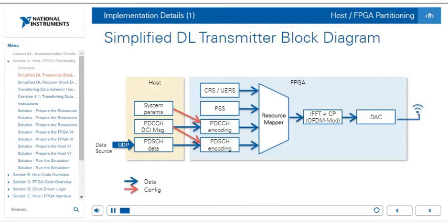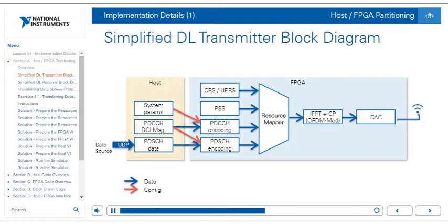This is a simplified block diagram of the downlink on the transmitter side. We can track the flow of both data and configuration information. Data from a UDP source reaches the host, which handles system parameters, the PDCCH and DCI messages, and the PDSCH data. The system parameters configure the PDCCH encoding on the FPGA, while the PDCCH and DCI messages configure the PDSCH encoding on the FPGA. Data flows from the PDCCH and DCI message to the PDCCH encoding, and from the PDSCH data to the PDSCH encoding, both of which are on the FPGA.